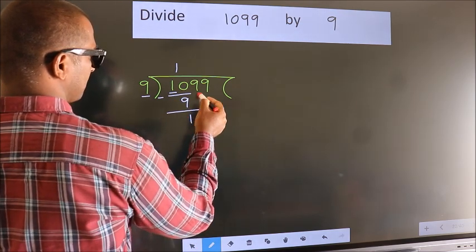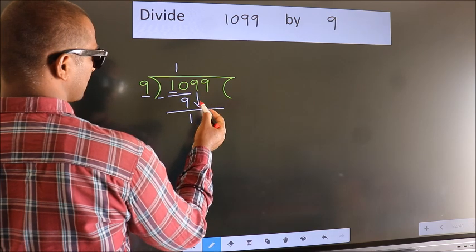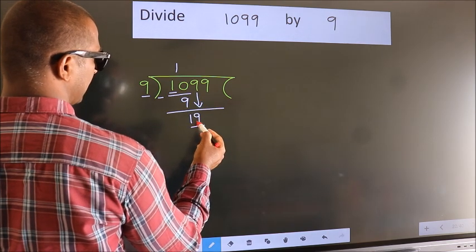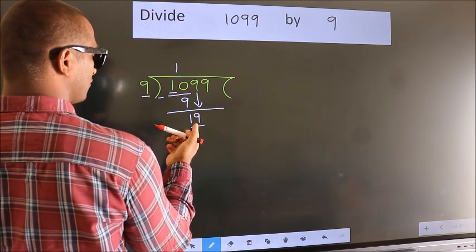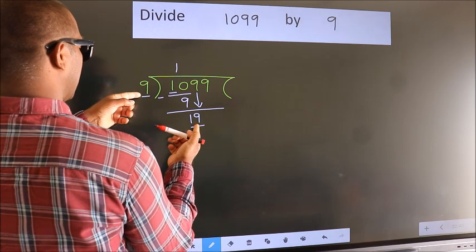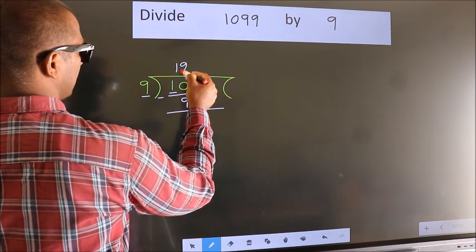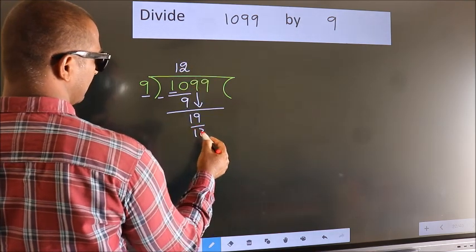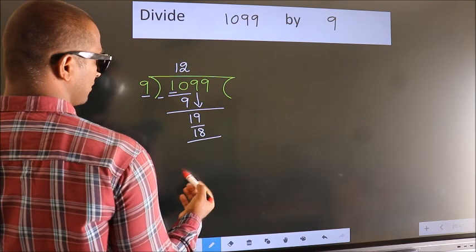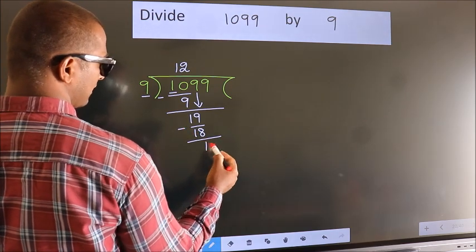After this, bring down the next number. So, 9 down, making 19. A number close to 19 in the 9 times table is 9 twos, 18. Now we subtract. We get 1.